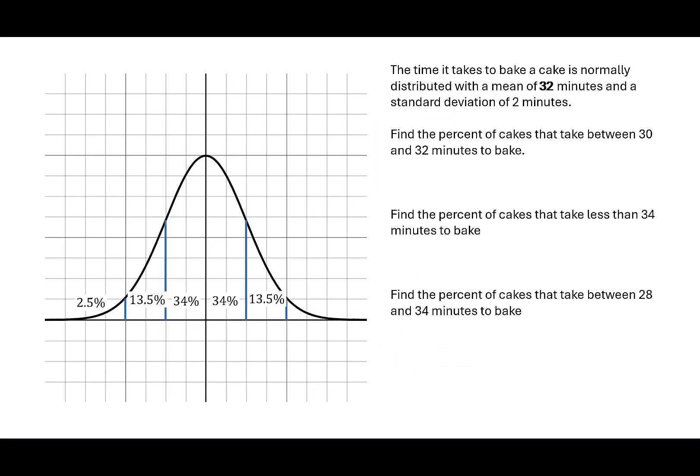Let's do a quick problem that uses the empirical rule. The time it takes to bake a cake is normally distributed with a mean of 32 minutes and a standard deviation of two minutes. We're going to use this information to answer a few questions.